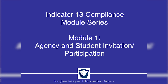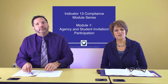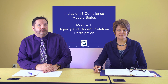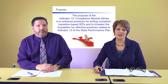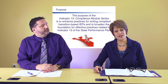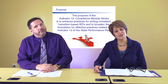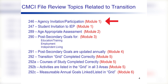Welcome to the Indicator 13 Compliance Module Series. Module 1 focuses on agency and student invitation and participation. The purpose of this series is to enhance practices for writing compliant, transition-based IEPs and to broaden the foundation for effective practices related to Indicator 13 of the State Performance Plan. Today's module focuses on agency invitation and participation and the student invitation to the IEP meeting. These topics come from the file review questions in the Cyclical Monitoring for Continuous Improvement Audit, when state auditors come in and monitor your district every six years.